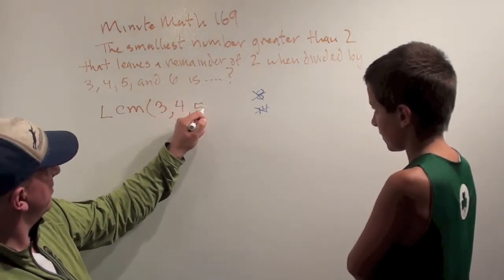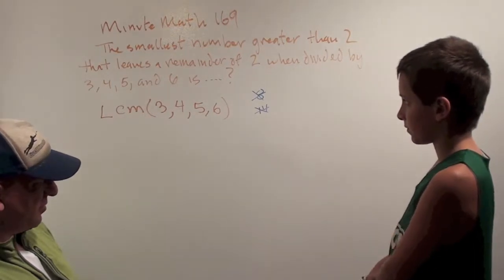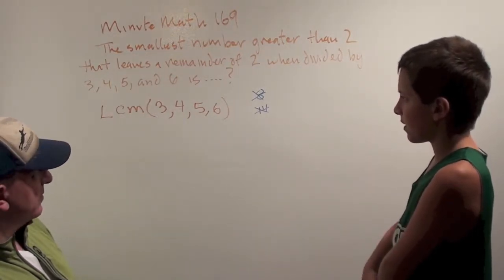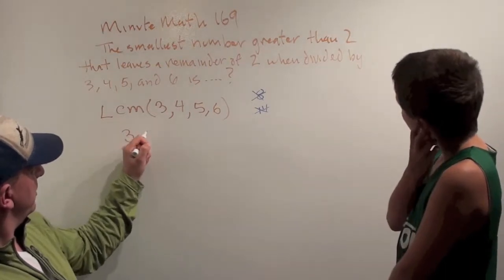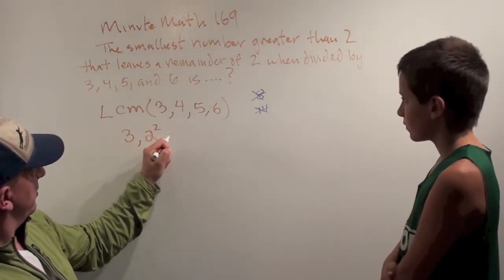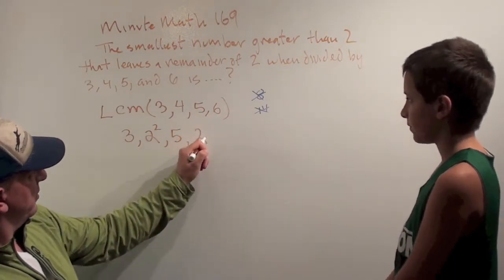The least common multiple of 3, 4, 5, and 6. Alright. How do we figure out what the least common multiple is? We have to take the prime factors. Okay. So the prime factors are 3, 2 squared, 5, and 2 times 3.